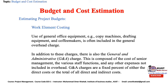In addition to these charges, there is also a general and administrative (G&A) charge, composed of the cost of senior management, various staff functions, and other expenses not included in overhead. G&A charges are a fixed percent of either the direct cost or the total of all direct and indirect costs. Thus a fully costed work element includes direct costs — labor, resources, and special machinery — plus overhead and G&A charges. We advise the project manager to prepare two budgets: one with overhead and G&A charges, and one without. The full-cost budget is used by accounting to estimate project profit, while the direct-cost-only budget gives the project manager the information needed to manage the project without being confounded by costs outside their control.